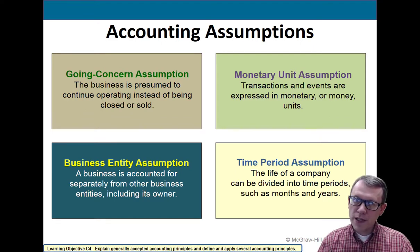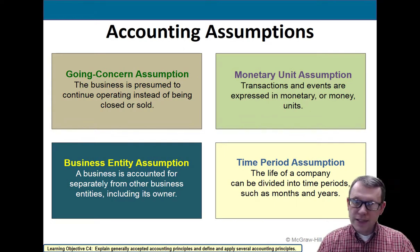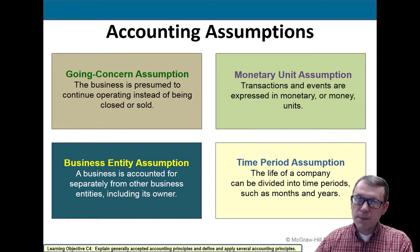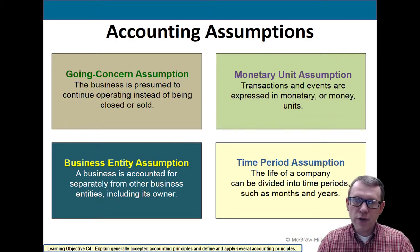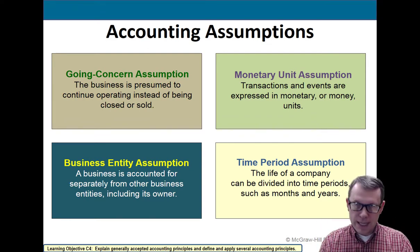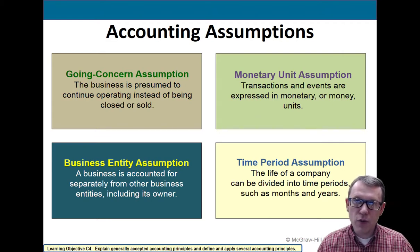The business entity assumption, in blue, means our accounting records are done for a specific defined business entity — whether it's a sole proprietorship owned by one person, a partnership with multiple owners, or a big corporation with departments and subsidiaries. We need to define that entity to move forward. The time period assumption means we assume our accounting is being done for a certain defined period of time — typically a year, either a calendar year (January to December) or a fiscal year (such as July to June).